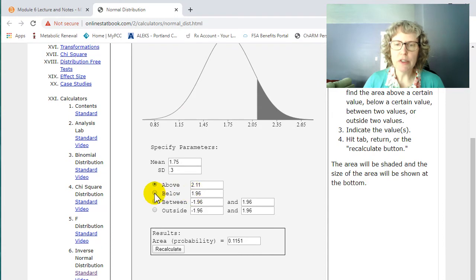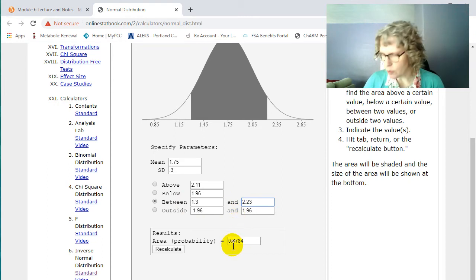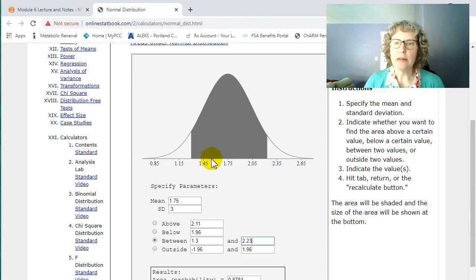So you can also do below this way. It's a little different. It doesn't have the brackets. It has these different options. Or between, we also did between 1.3 and 2.23. And that came out to 0.8784. So there is that image right there.